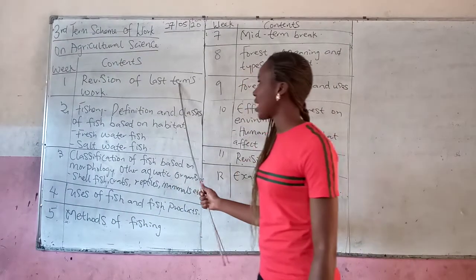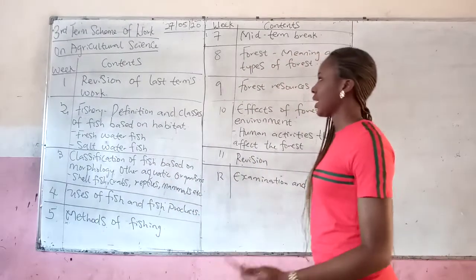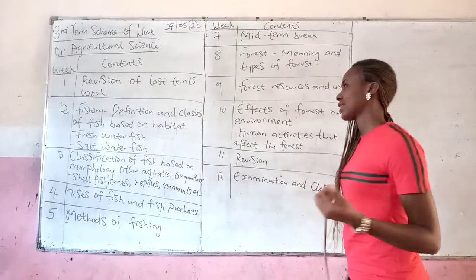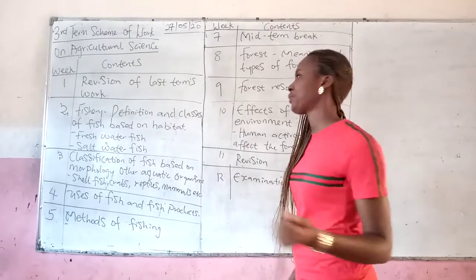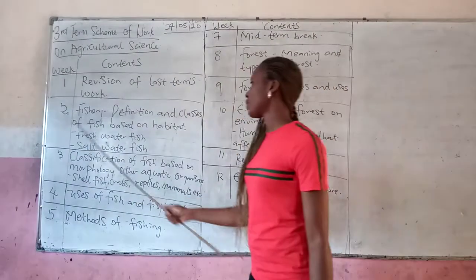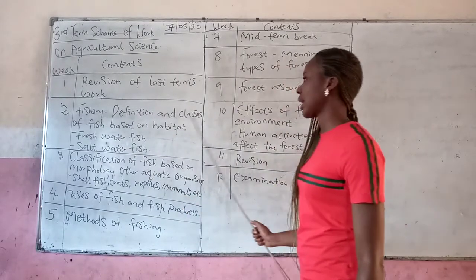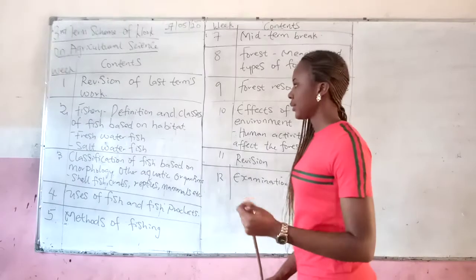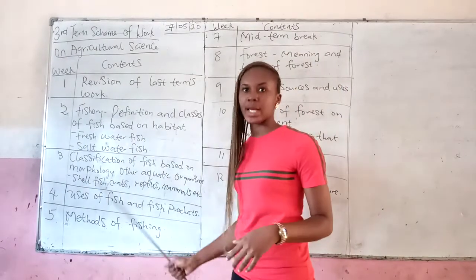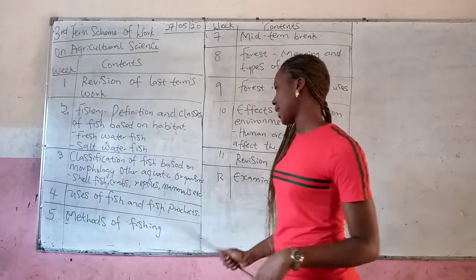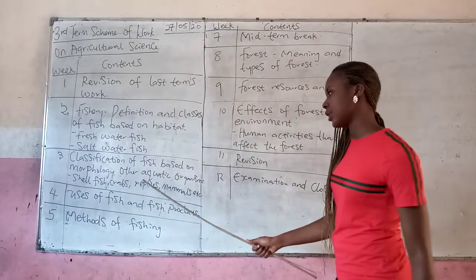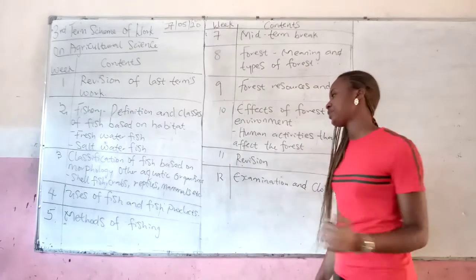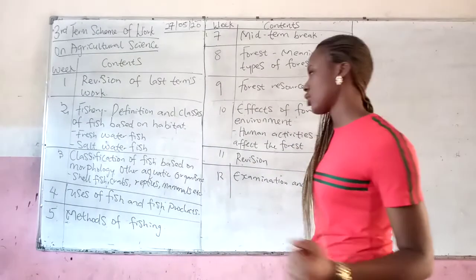It says revision of last time's work. We know how we can go and discuss our work, the things we did last time. Week 2 says Fishery: definition and classes of fish based on their habitat. We will look at the freshwater fish and the saltwater fish. Week 3 will have classification of fish based on their ecology and other aquatic animals. Fish consist of crabs, mammals, reptiles, and the rest of them.